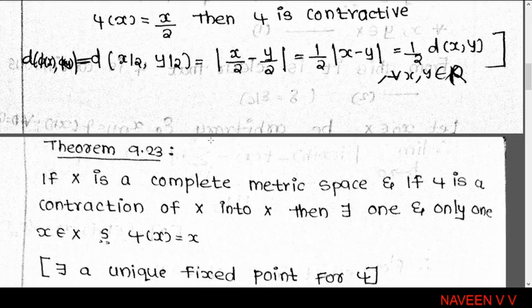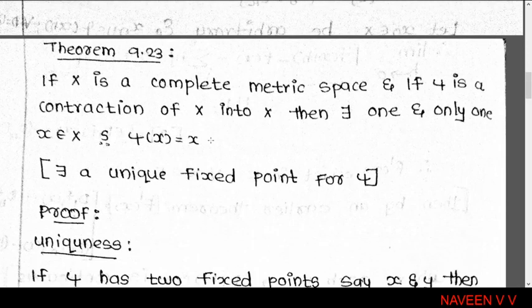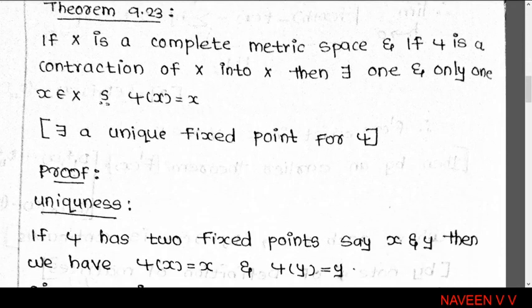Theorem 9.23: If X is a complete metric space and if φ is a contraction of X into X, then there exists one and only one x belonging to X such that φ(x) = x.